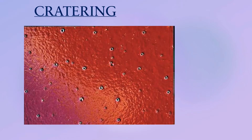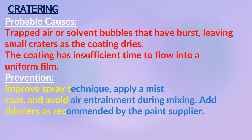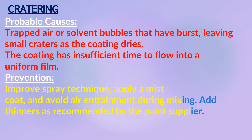Cratering: the formation of small bowl-shaped depressions in the paint film, not to be confused with crazing. Probable causes: trapped air or solvent bubbles that have burst, leaving small craters as the coating dries; the coating has insufficient time to flow into a uniform film. Prevention: improved spray techniques, apply a mist coat, avoid air trap during mixing, and add thinners as recommended by paint suppliers.